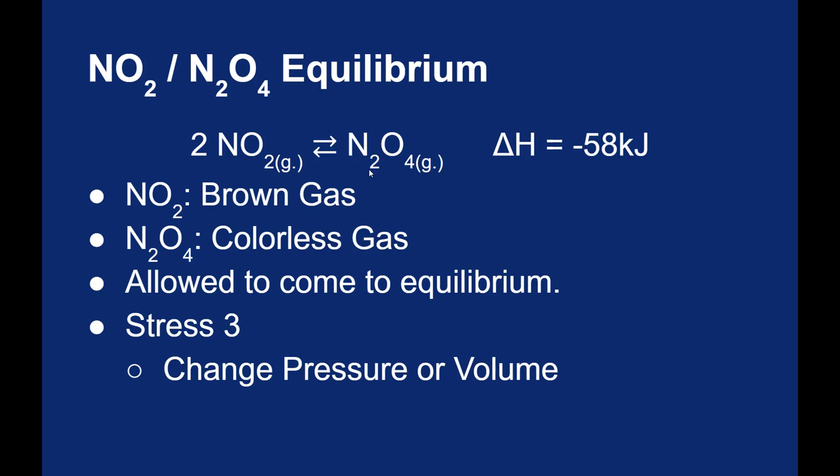But changes in pressure can also be done by adding a gas that's not involved in the reaction. Generally, this is done with an inert gas, like a noble gas or something like nitrogen. If you pumped in an inert gas into the container, well, you would be increasing the overall pressure in the system. However, that inert gas is not involved with the equilibrium expression at all. So by changing the pressure by adding an inert gas, you don't actually affect the equilibrium.